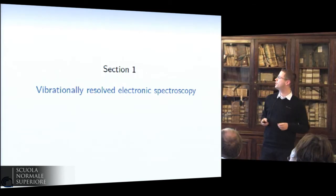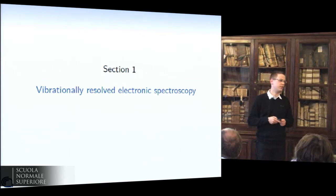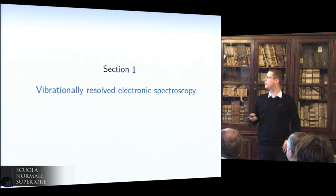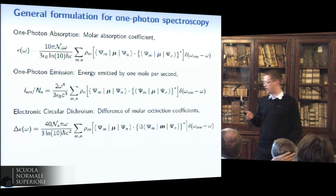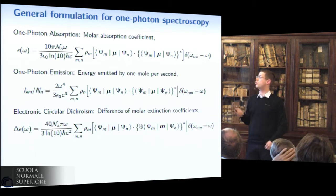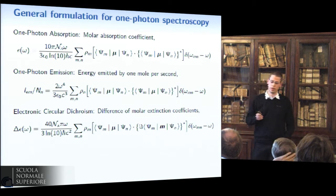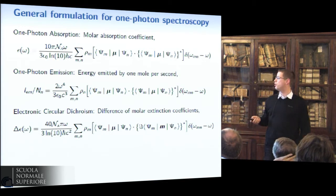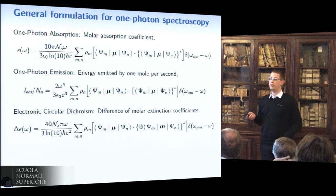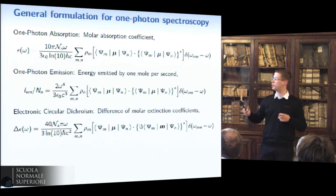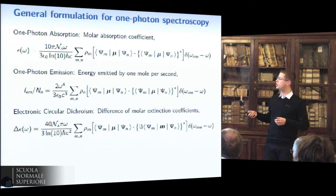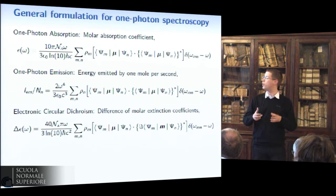Starting from vibrational resolution of electronic spectroscopy, also known as vibronic spectroscopy, we first implemented one-photon absorption and one-photon emission, and later also electronic circular dichroism. At that point it became obvious that if we wanted to extend further our module to add new spectroscopies, we needed to find a way to generalize the equations and combine them.